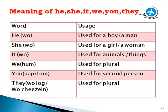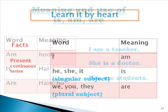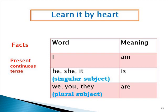Let's proceed with the meaning and use of 'is', 'am', 'are'. 'Am' means 'hoon'. 'Is' means 'hai'. 'Are' means 'hain' or 'ho'. 'Hain' is for plural; 'ho' is for singular when translating into Urdu or Hindi. This table has to be learned by heart. It is used when we talk about facts and while using present continuous tense.